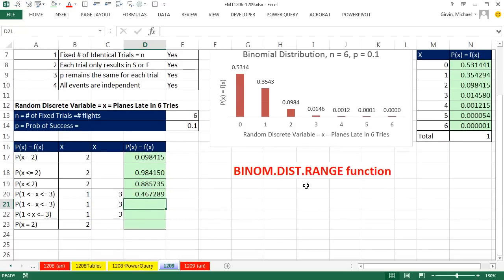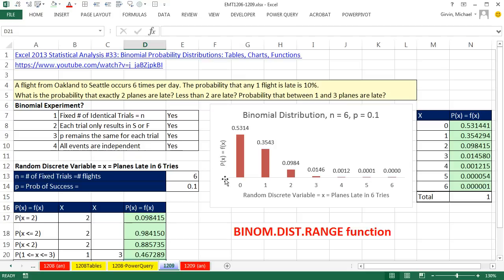But the nice thing about this function, which I didn't cover in that particular video, is this function can calculate an individual binomial probability, or you can give it a lower and an upper, and it will calculate between an upper and lower to get the total probability. Now, our binomial experiment, here it is.